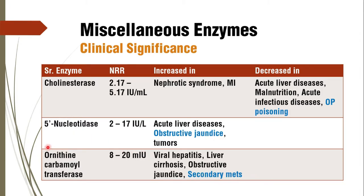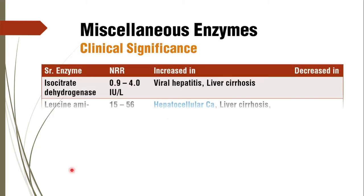Coming to the third miscellaneous enzyme, ornithine carbamoyltransferase. It is found to be increased in viral hepatitis, liver cirrhosis, and obstructive jaundice. Because it is a liver enzyme, it is increased in liver pathology. But if there are suspected secondary metastases in liver and you find this enzyme increased, that gives you confirmation that the tumour is somewhere else — some other tissue is the primary cancer site and secondary metastasis is proliferating in the liver.